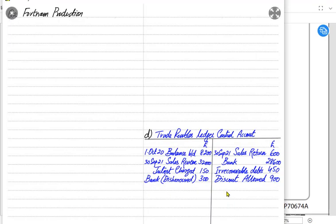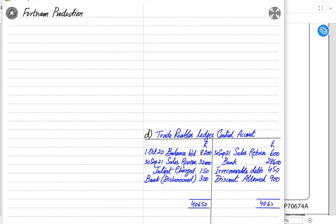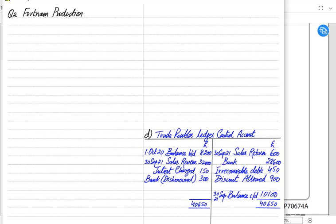The allowance for irrecoverable debt is given to confuse us and must not be written in this account. To find the closing balance: the opening debit balance comes on the debit side, so the closing debit balance comes on the opposite side. The debit side is the larger side. After deducting all credit-side items, we are left with balance c/d (carried down), which is the closing balance. Balance b/d (brought down) is the opening balance for the next period — after 30th September comes 1st October. This completes the trade receivables control account.